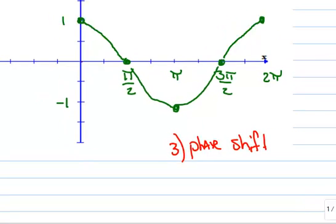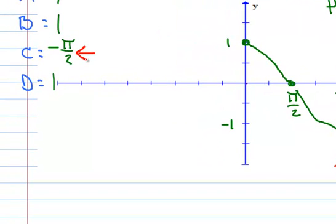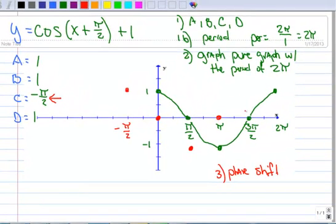Okay, so it's negative. That means it's going to move to the left, and it moves to the left pi over 2. So everywhere there's a critical point, it's going to go to the left pi over 2. So this maximum, which is at zero, will now be here at negative pi over 2. This x-intercept moves to the left pi over 2. This minimum moves to the left pi over 2. This x-intercept moves to the left pi over 2. And this maximum moves to the left pi over 2. And we're going to connect those. Nice smooth curve here. There we go.